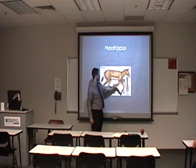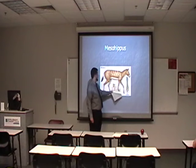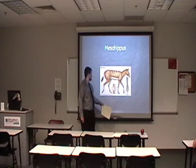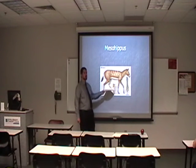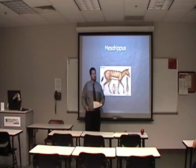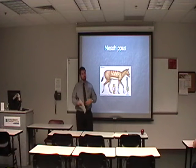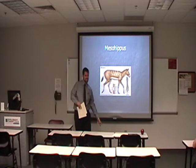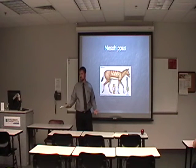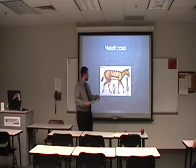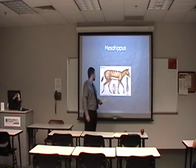Anyway, they had toes and eventually lost them. You can still find horses in modern day that have a recessive gene for being polydactyl. You get cats like that too, with six toes. You get horses that have extra toes.